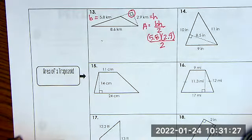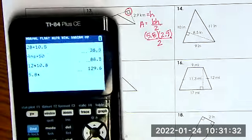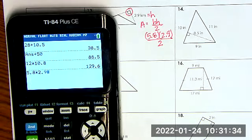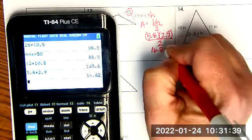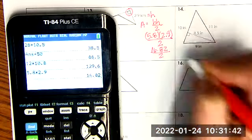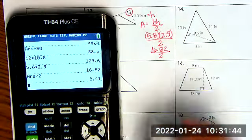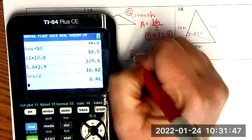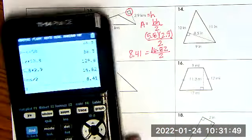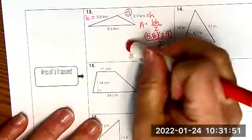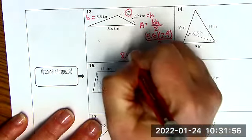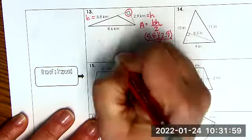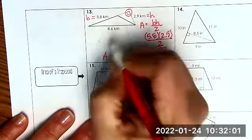Now I'm going to do the multiplication on the top first. 5.8 times 2.9 enter. So that gives me 16.82 divided by two. And that equals 8.41. 8.41 kilometers squared. That is what my area equals.